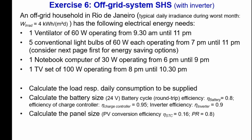We then calculate the panel size. We have a conversion efficiency under standard test conditions at 25°C. In the tropics, module temperatures are quite elevated, so we have a relatively low performance ratio of only 0.8. For the panel size, we also consider irradiance. Since the system must work all year, we take the typical irradiance during the worst month of the year. For Rio, that is 4 kilowatt-hours per square meter per day.